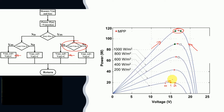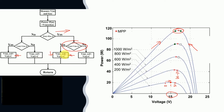As a result, from point number one the system jumps to a new point number three. This jump in system power from point one to point three actually deceives the Perturb and Observe algorithm. The system computes the power at point three, sees that it is greater than the power at point one, and also sees that the voltage at point three is greater than the voltage at point one — so it gives another perturbation in the same direction.